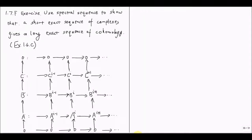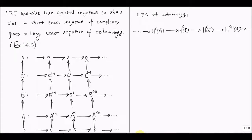Now let us use spectral sequences to show that a short exact sequence of complexes will induce a long exact sequence of cohomology. Let's prove this by first computing the spectral sequence using the upward orientation.